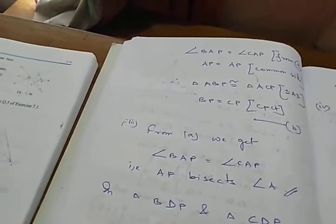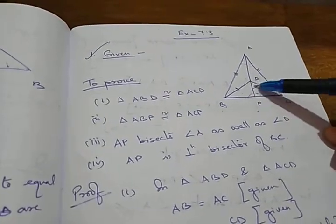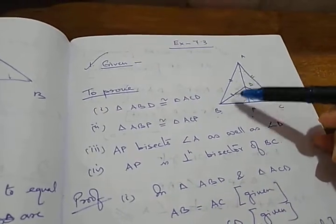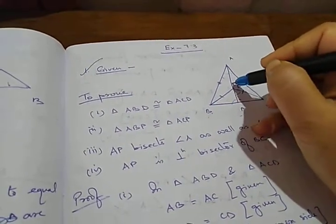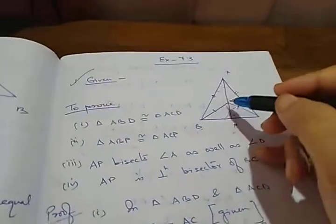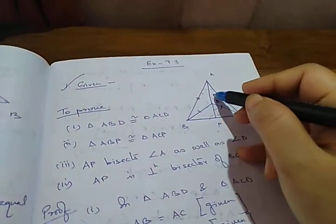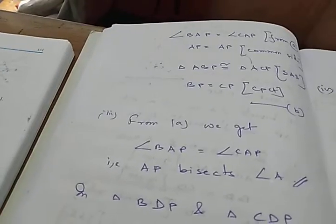Now it comes to number 3. We have to prove that AP bisects angle A as well as angle D. Already we have proved that angle BAP equals to angle CAP — that means this part equals to this part. Since these two angles are equal, therefore AP bisects angle A. From A we have BAP equals to CAP, therefore AP bisects angle A.